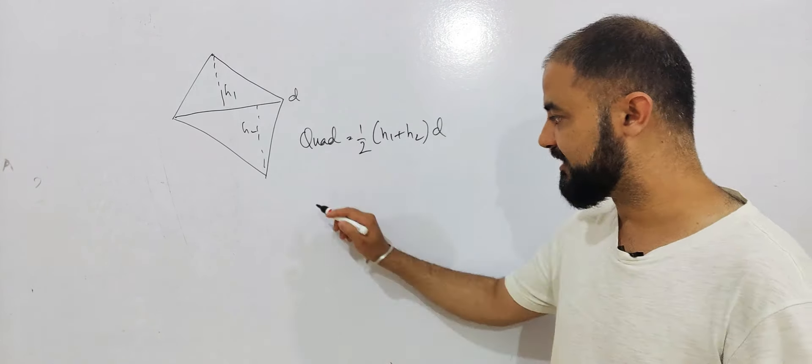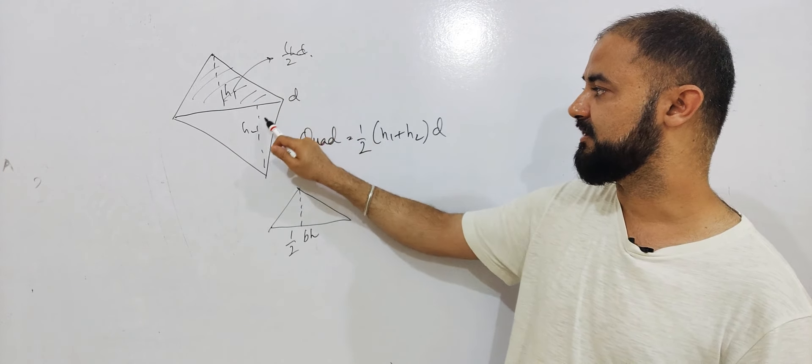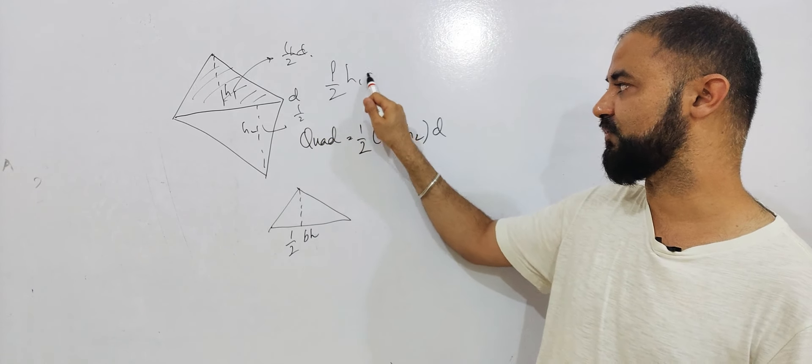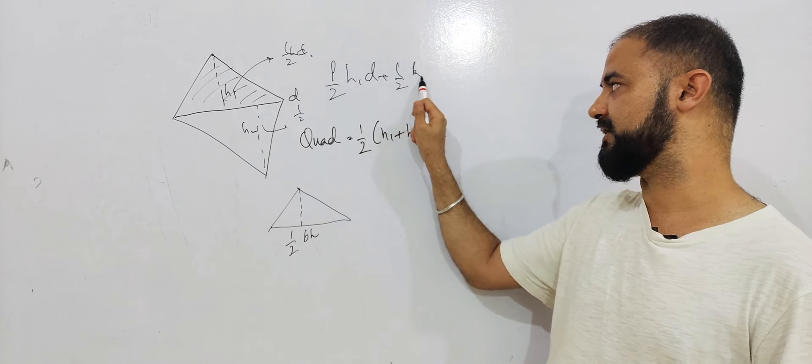So I can break this quadrilateral into two triangles. The upper one's area will become half H1D, and the lower one will become half H2D. So half H1D plus half H2D. If I join them together, it becomes half of H1 plus H2 times D.